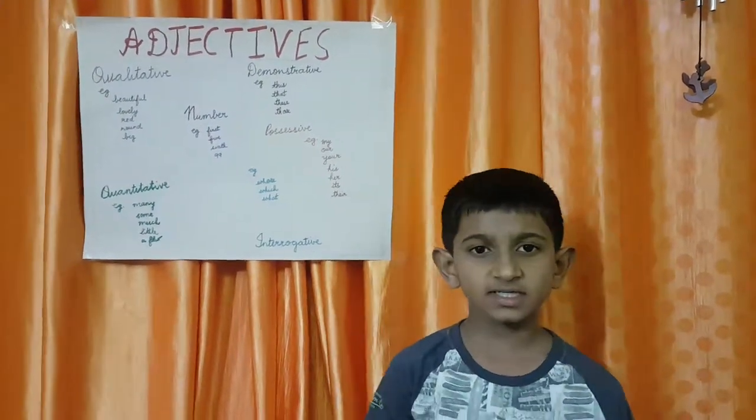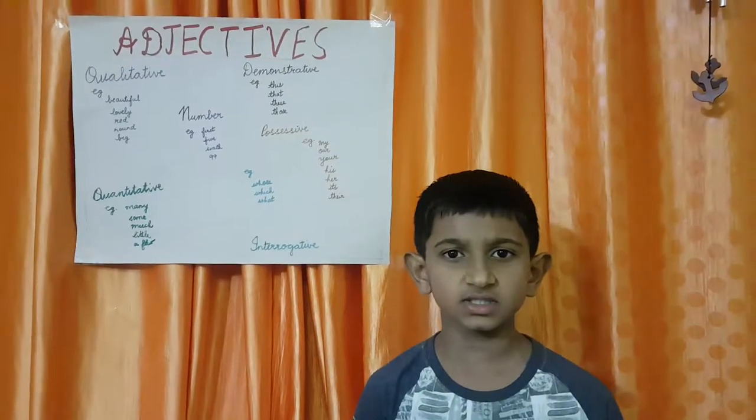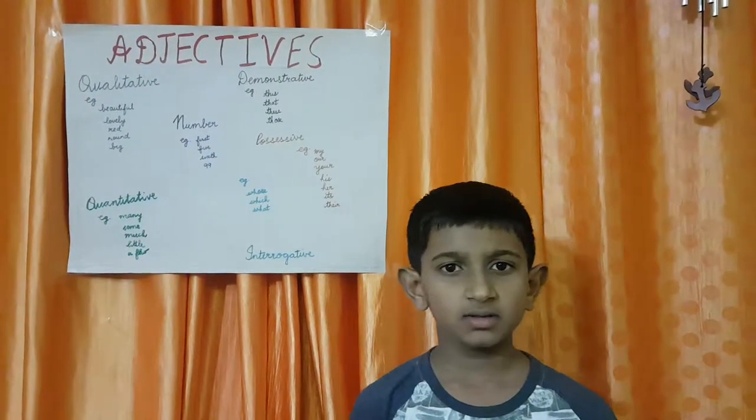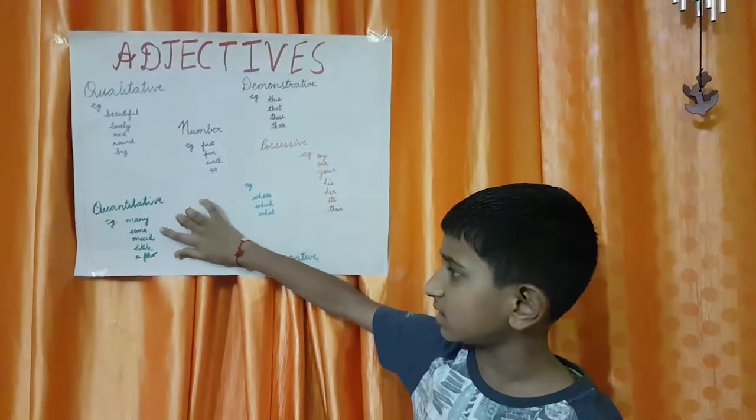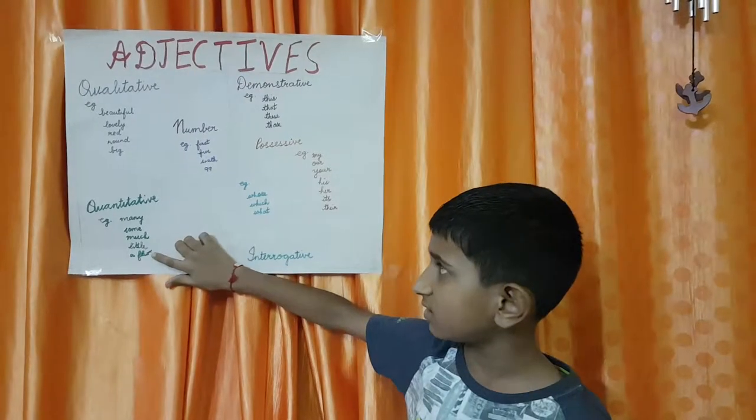Quantitative adjective tells about the quantity of the thing. For example, Many, Some, Much, Little, Few.